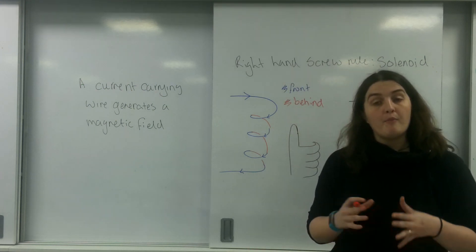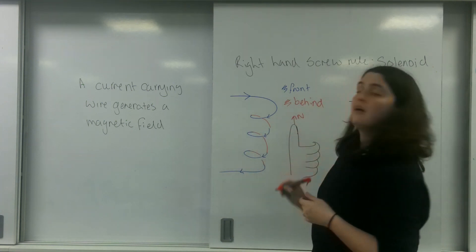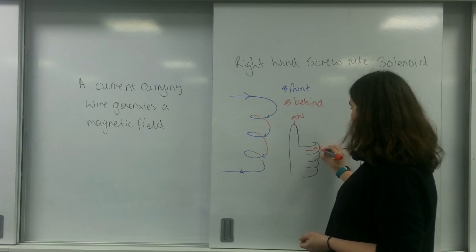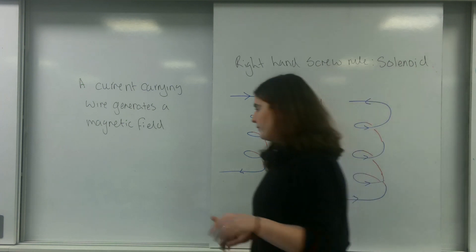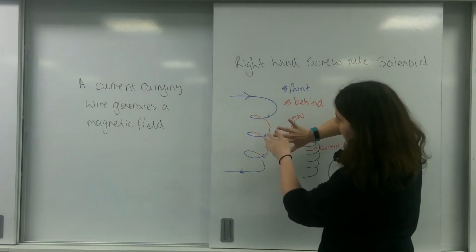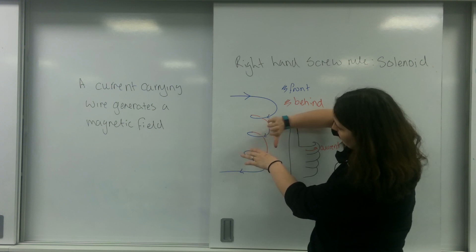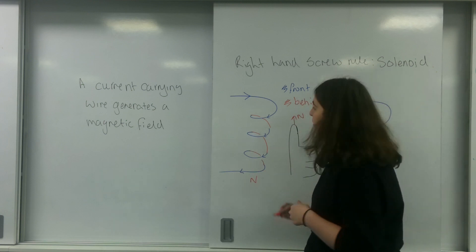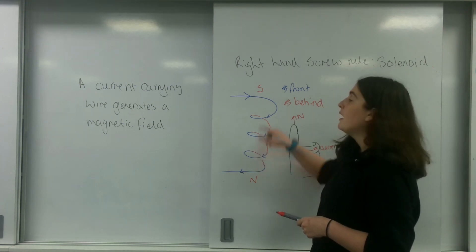In a solenoid, the right-hand screw rule works differently. For a wire, the thumb represented the direction of the current. For a solenoid, the thumb points to the north of the magnetic field, and the fingers indicate the direction of the current — again, conventional current. So if I take my right hand and use my fingertips to represent the current on the front blue part, my fingers go this way, and my thumb is pointing downwards, which means the bottom is the north pole and the top is the south pole.